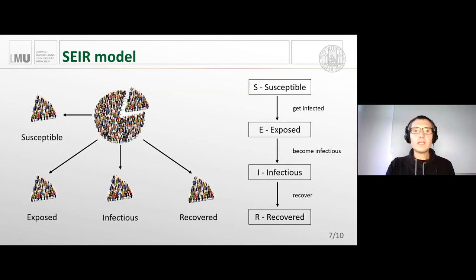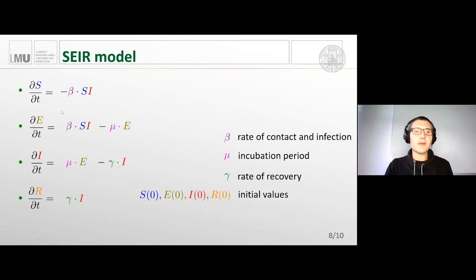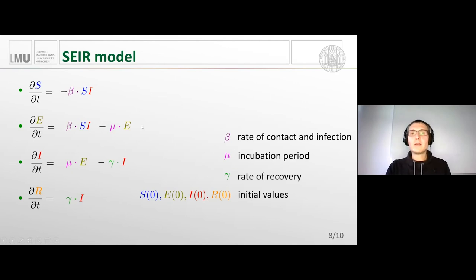We can derive the differential equations for SEIR as before. The rate of change of E contains the beta times S times I term that was previously in the rate of I, plus an additional parameter mu for the incubation rate, subtracted: dE/dt = beta·S·I − mu·E. The derivative of I becomes mu·E − gamma·I. We now have an additional state and one more line in our differential equation system.